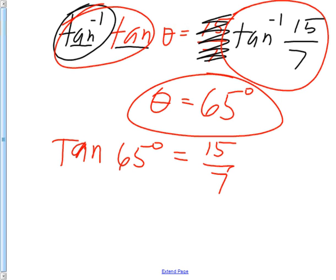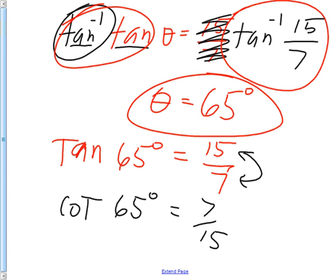So tangent has its doppelganger and you need to make a list of these things because this is one of the things you're learning today. Tangent has its cotangent is the one that is its doppelganger. So the cotangent of 65 degrees then would be 7 over 15. See what we did there? We just flip-flop these things around. It's a reciprocal.